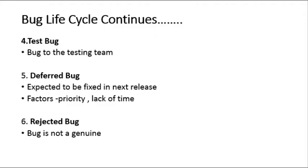The next status is Deferred. When the bug is expected to be fixed in a future release, the status will change to Deferred. Many factors influence this — for example, the priority of the bug may be low, there may be a lack of time for the release, or the bug may not have a major effect on the software. In such cases, the development team or management will move the status to Deferred.